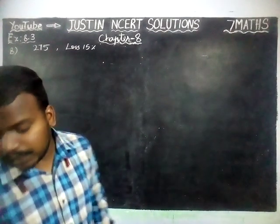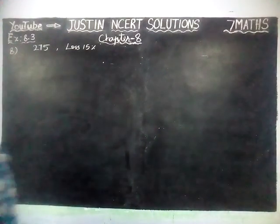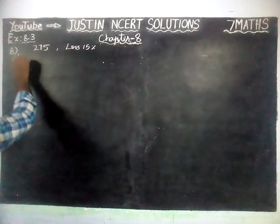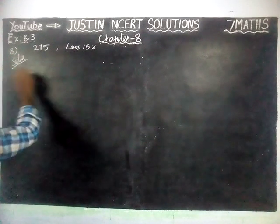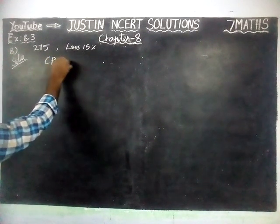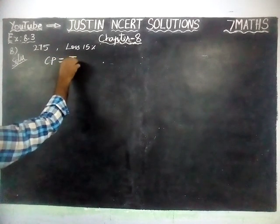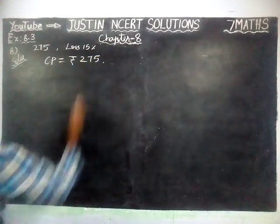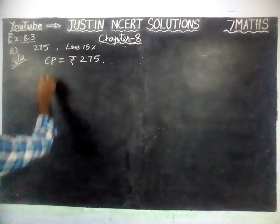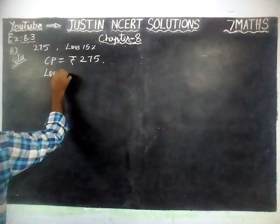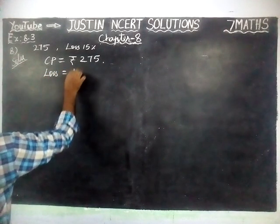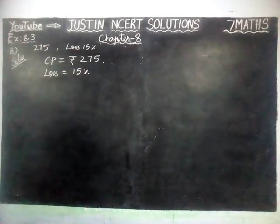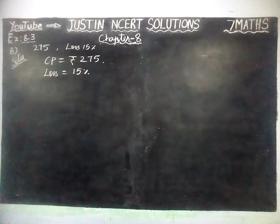Here, they have given the cost price. We will write the given information. Cost price CP is equal to Rs. 275. Loss percentage is equal to 15%. We have to find the sale price.